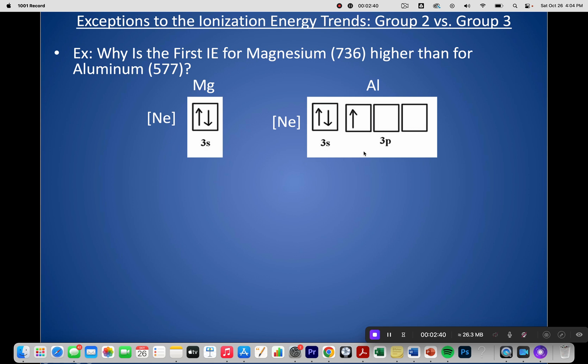Whereas Group 15 and 16, that is your paired electron repulsion argument. So know those two anomalies or those two little dips in ionization—the AP loves to ask about them.